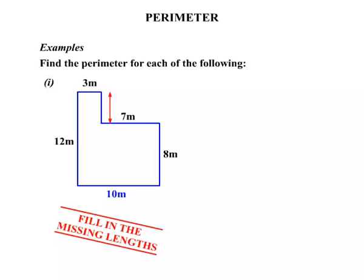Now there's one more missing length we need to fill in. That distance there. Well if we consider the whole height of the shape is 12m, and part of the height there is 8m, so we need to think 8 plus something would make the 12. And that would have to be 4m. 8 plus 4m makes up that 12m. So we've filled in the missing lengths.